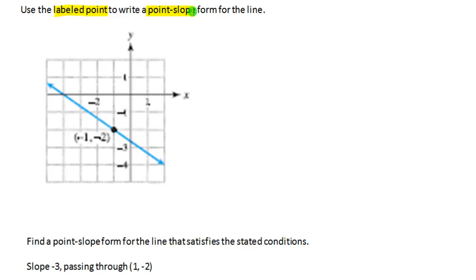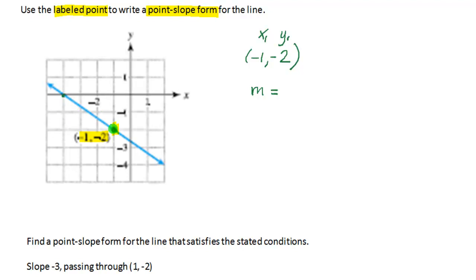Use the labeled point to write a point slope form for the line. Our labeled point is negative 1, negative 2, and that is going to be our x1, y1. You may find it helpful to label x1 and y1 right over each number so you know which is which. Now we need to find the slope of this line. We count to another point that lies easily — going up 2 and to the left 3 units gets us to the x-intercept. So up 2 is positive 2, left 3 is negative 3, giving us a slope of negative 2 thirds.